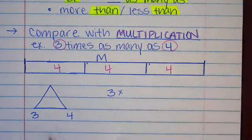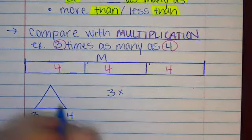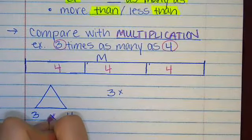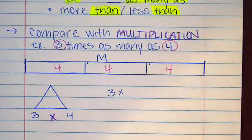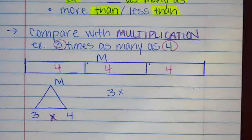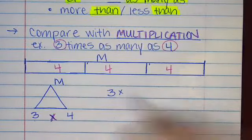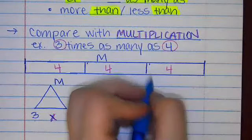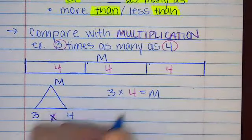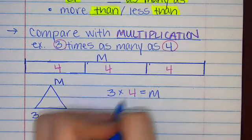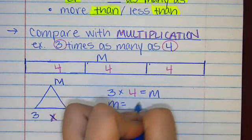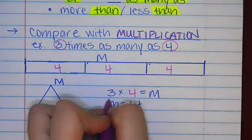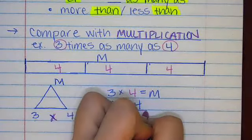All right, the problem said that the Rangers scored three times as many as the Stars. The Stars were the amount four, and that is what Max said. So I'm going to name this M for Max. So that is three times four, and that is going to be equaling what Max said, what his guesstimate or his amount was. So three times four equals 12. So Max is saying that the Rangers scored 12 runs.